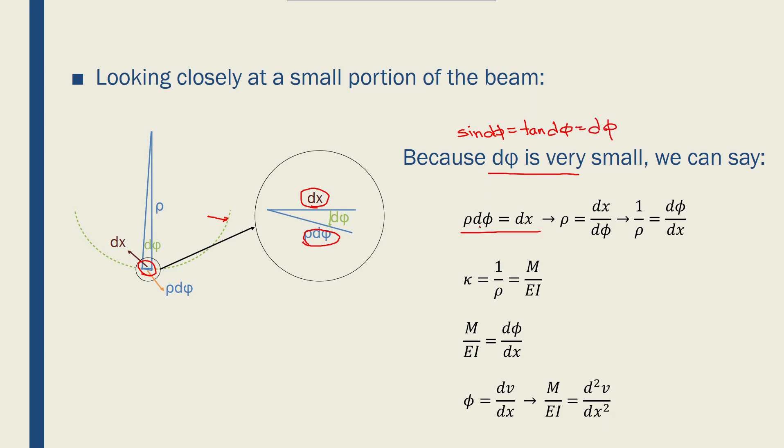So we can assume that rho d phi, which is the length of this portion, is equal to dx. So we can write rho d phi is equal to dx, and as a result rho becomes dx over d phi, or we could rewrite it as 1 over rho becomes d phi over dx.